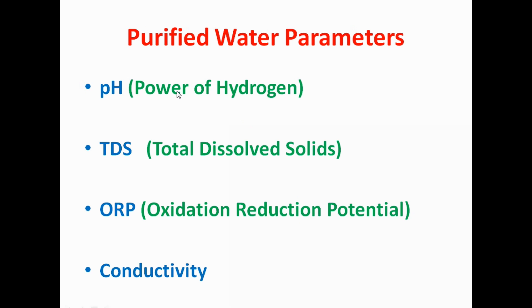These are the parameters we maintain for purified water in pharmaceutical industry. First parameter is pH, power of hydrogen. Second parameter is TDS, total dissolved solids. Third parameter is ORP, oxidation reduction potential. And fourth important parameter is conductivity. These four parameters we maintain for purified water.